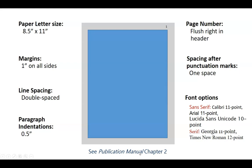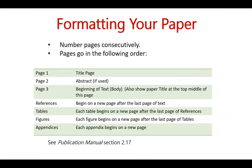See the publication manual chapter two for additional information about any of these points. When you format your paper, number pages consecutively. Pages go in the following order: title page is page one; an abstract, if used, is page two; if no abstract is required, page two is the beginning of the body of your paper. Make sure to show the paper title at the top middle of the body page — see section 2.17 for more information. References begin on a new page after the last page of text. Tables and figures, especially for publication submissions, go at the end after references, with each table, figure, and appendix beginning on a new page. For some classes, your professor may prefer tables or figures within the document, so make sure to check.